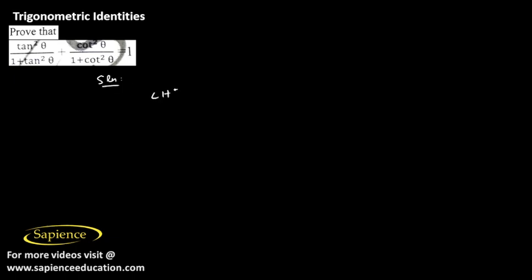Now in the next question, the left hand side is tan squared theta divided by (1 plus tan squared theta), plus cot squared theta divided by (1 plus cot squared theta).